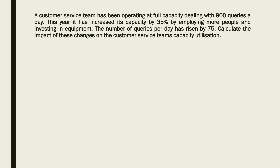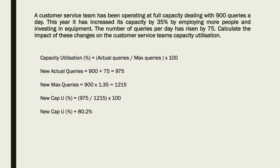So there's the question. We're going for the first bits that we need to do to calculate the answer. We need to get the capacity utilisation formula, which is simply actual over max times by 100, because it's a percentage. In this case we're dealing with queries, so actual queries divided by max queries times by 100 will get us halfway to the answer.